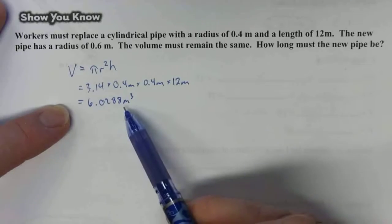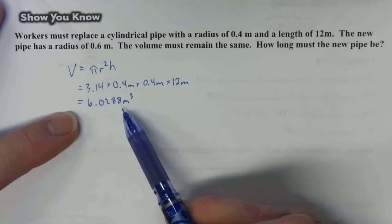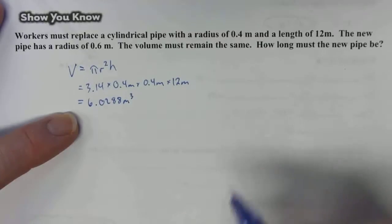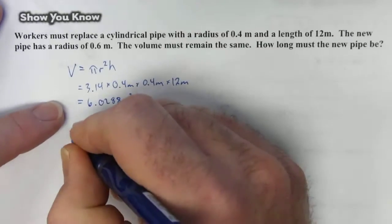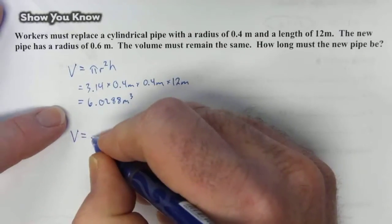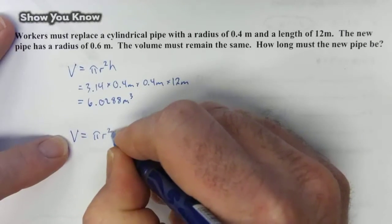Now, so we know the original volume. The new pipe has to have the same volume, but it's going to have a different radius. So we need to work backwards. But we can still use the same formula. Volume is equal to pi r squared h.